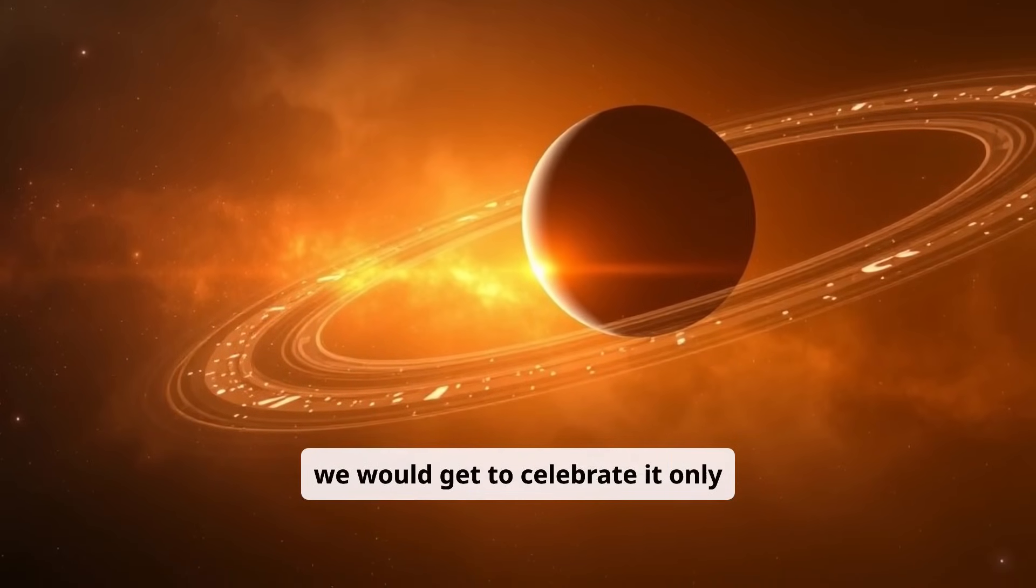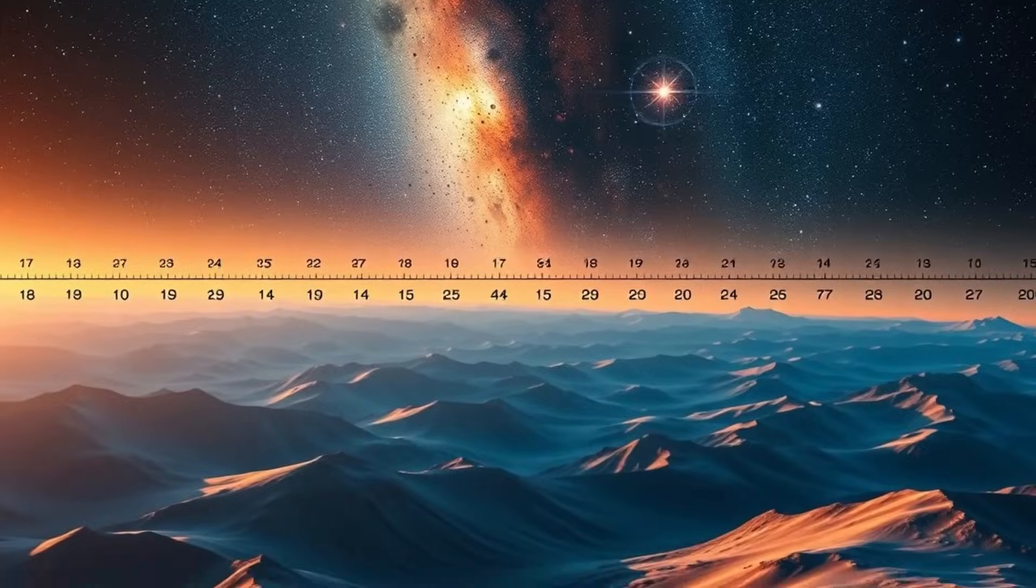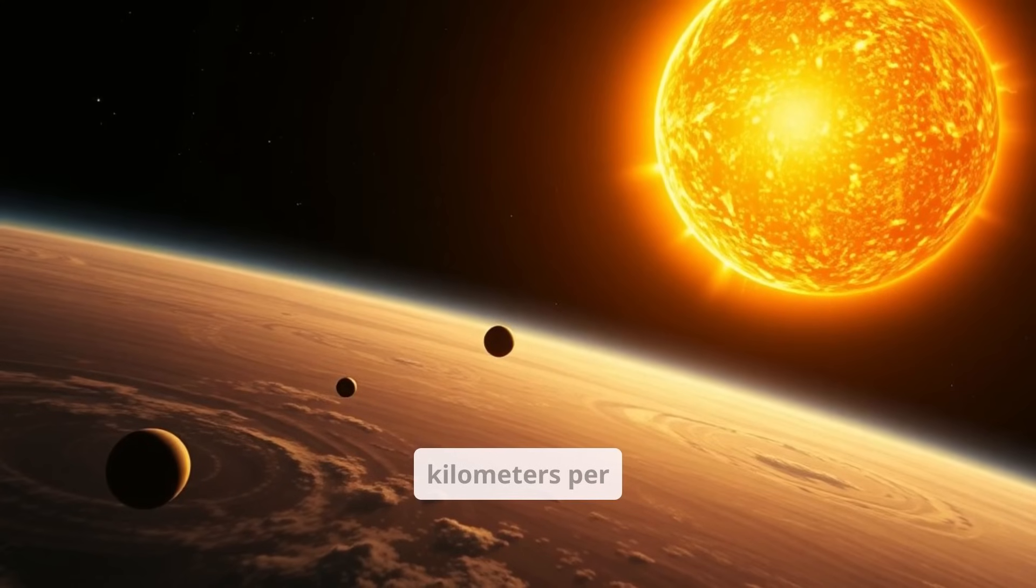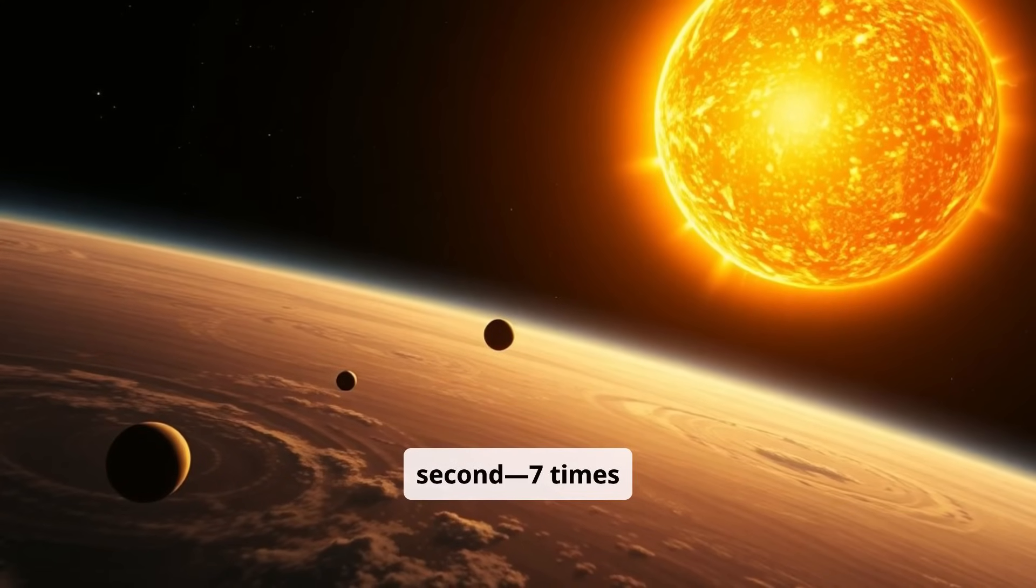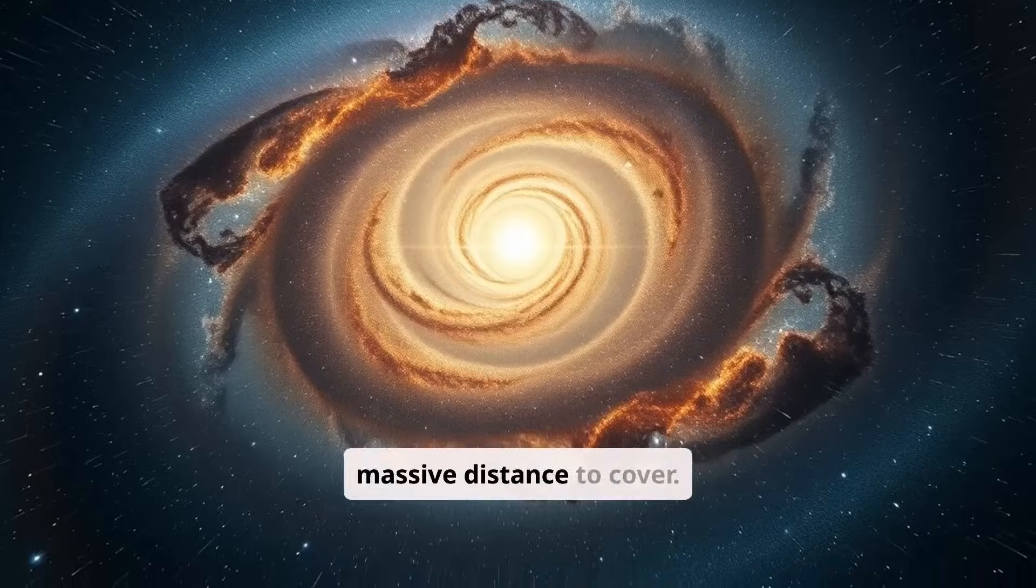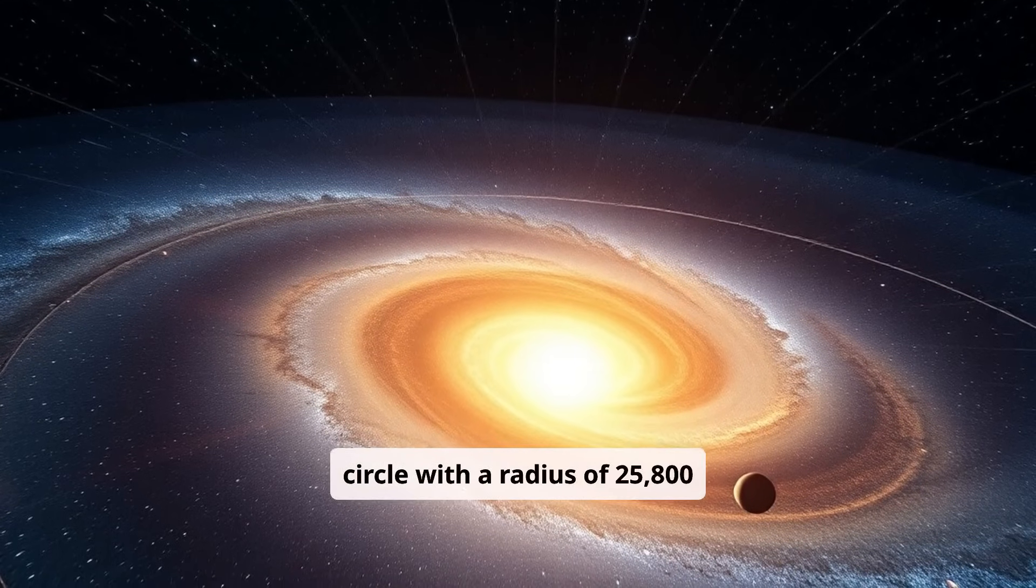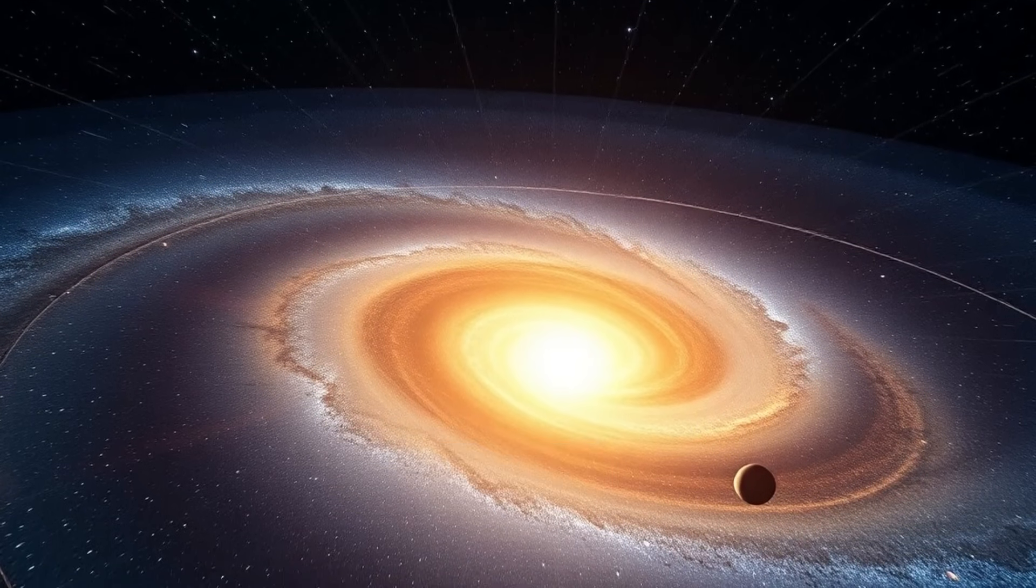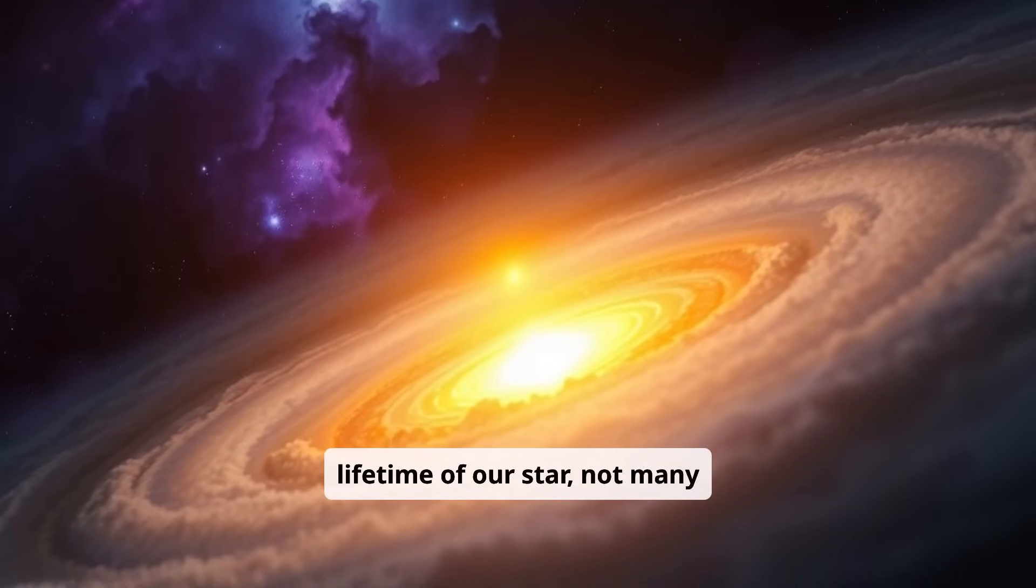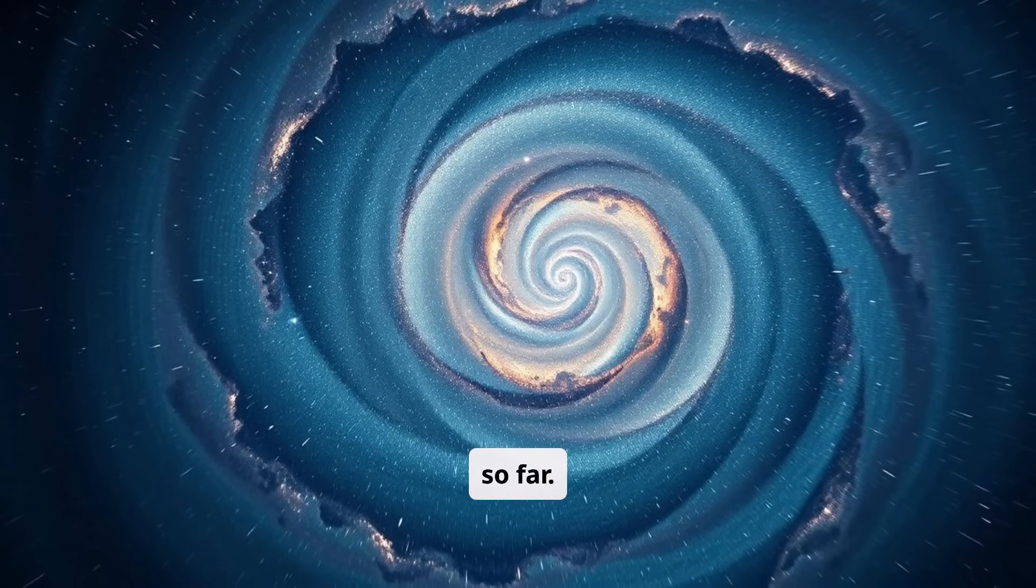And that's even though the Sun, along with its planets, rushes through space at a speed of 217 kilometers per second, seven times faster than the Earth orbits the Sun. It truly has a massive distance to cover. Its orbit is close to a circle with a radius of 25,800 light years. That's why, in the lifetime of our star, not many galactic years have passed, the center of the Milky Way has been orbited only about 18 times so far.